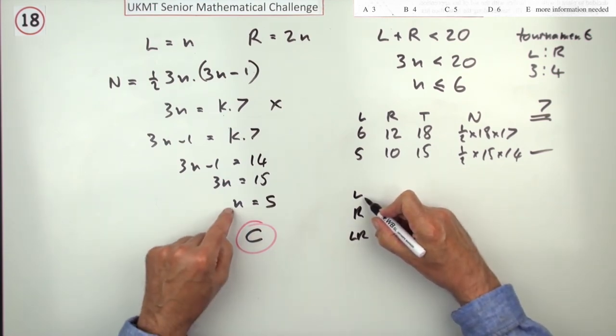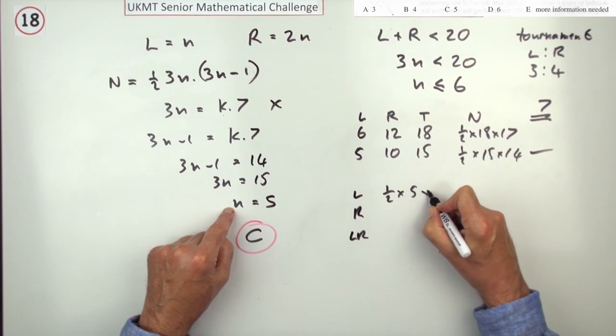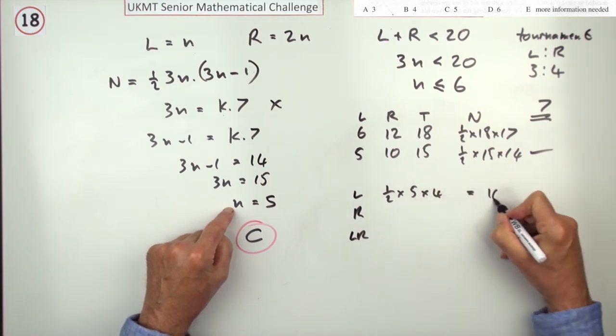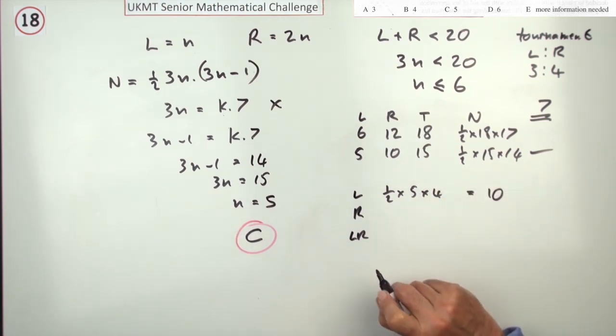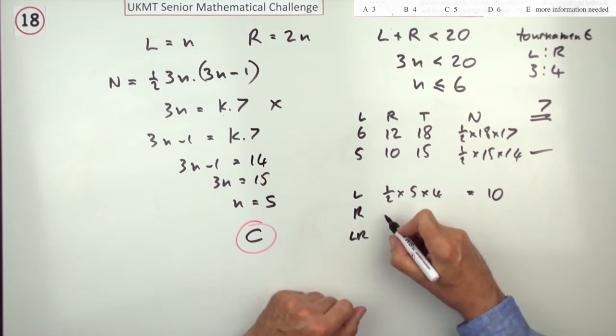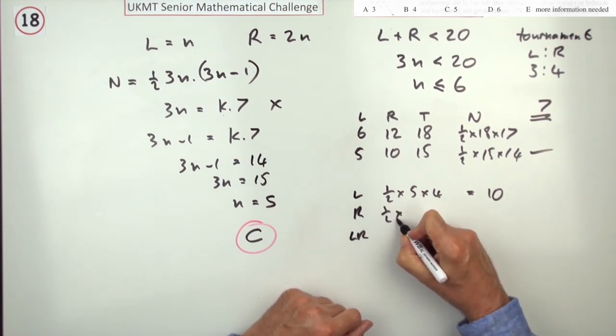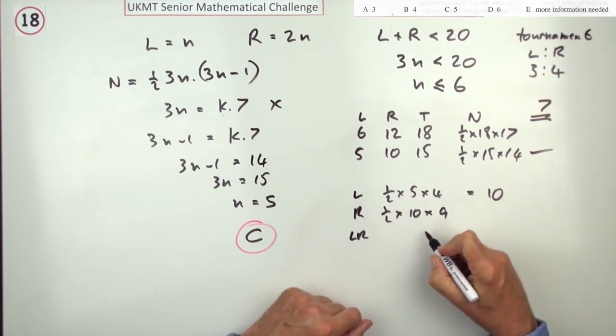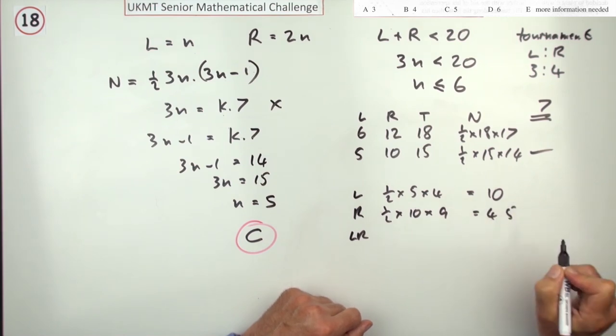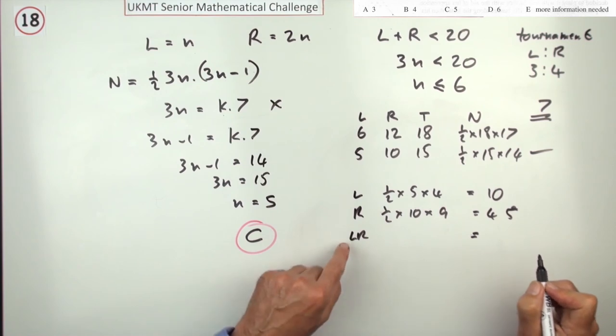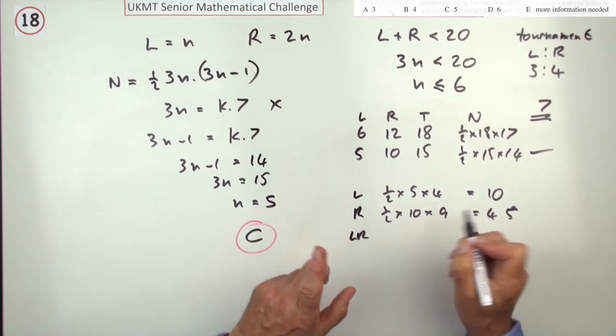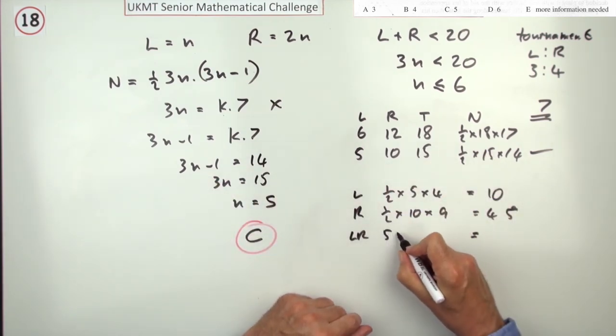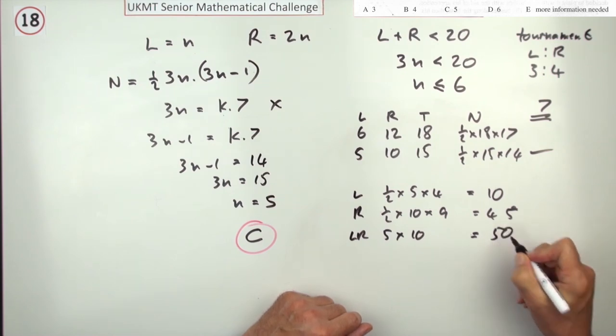Left-hand matches, now I know there's 5 of them, there'll be a half of 5 times 4, so that's 10 matches between left-handed players, so a left-handed player must win. Right-handed matches, there'll be a half of 10 times 9, 5-9 is 45 matches, so that's 45 wins for the right-handed players. Now the left-right matches will be, not half of, because it's between groups, 5 times 10, so there's 50 matches.